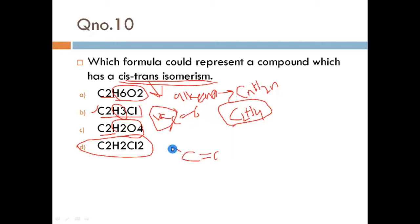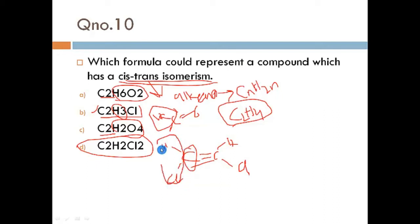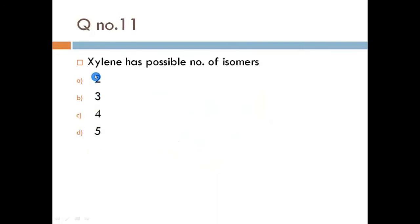The reason this is correct: drawing the structure — C=C with H and Cl on one carbon, and H and Cl on the other carbon. There is a double bond present, and each double bonded carbon has two different groups attached (H and Cl on each side). Both conditions are fulfilled, so this is our answer. The hint: first identify which compound is an alkene, then check that different groups are attached to each double bonded carbon.